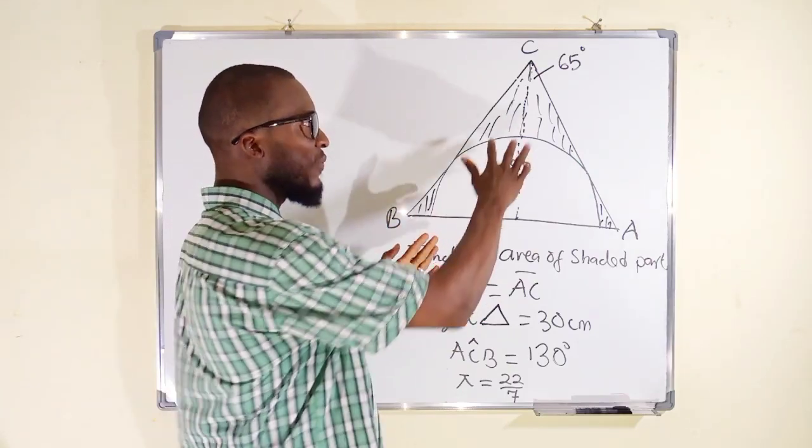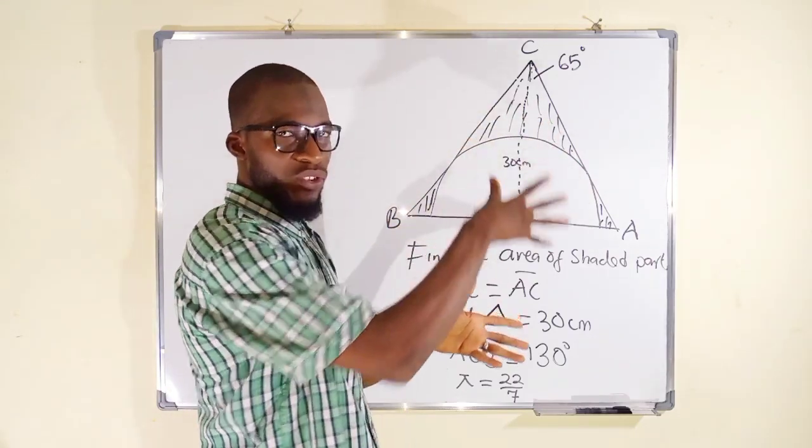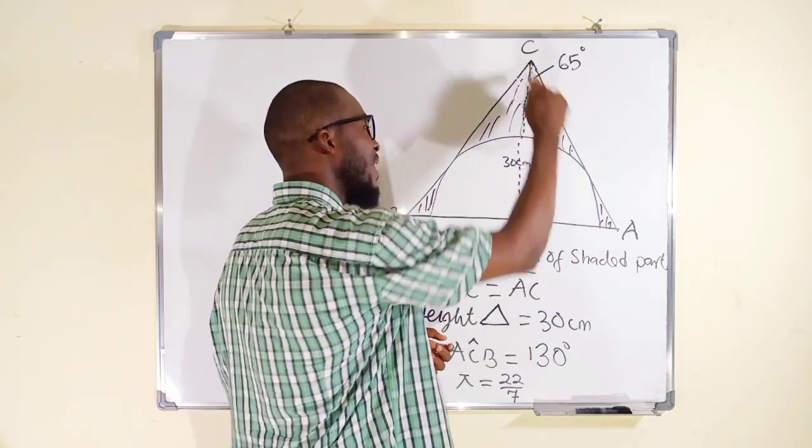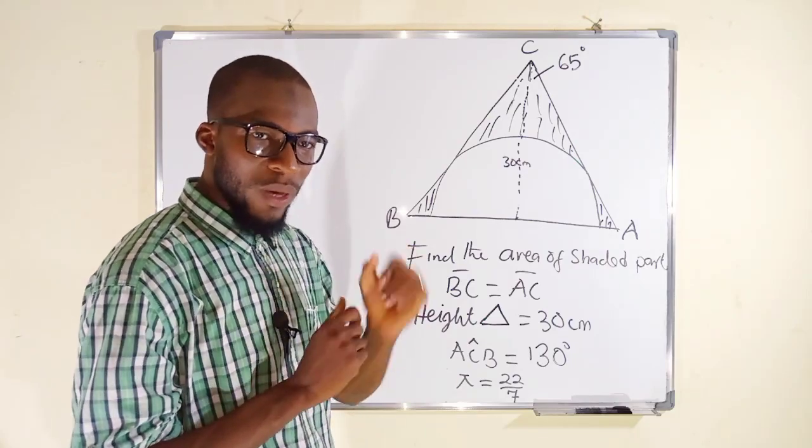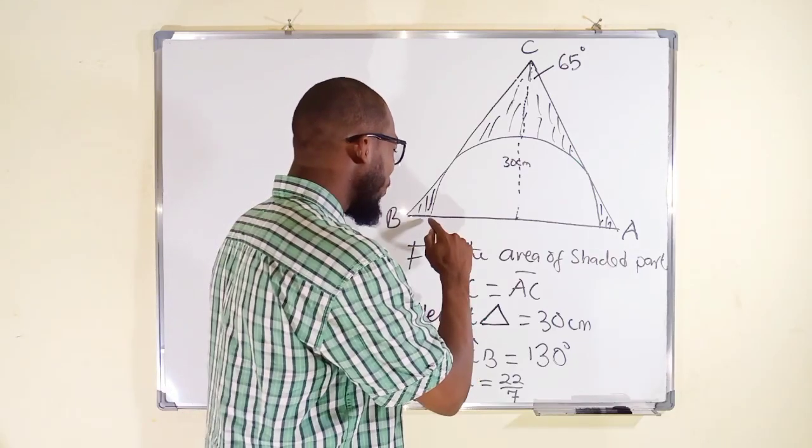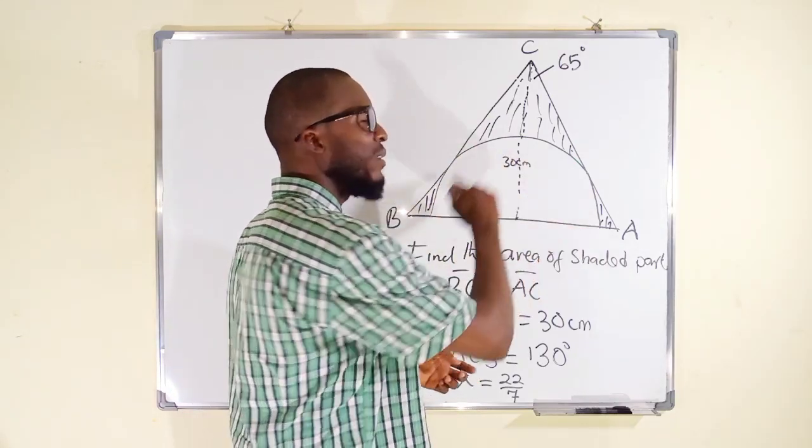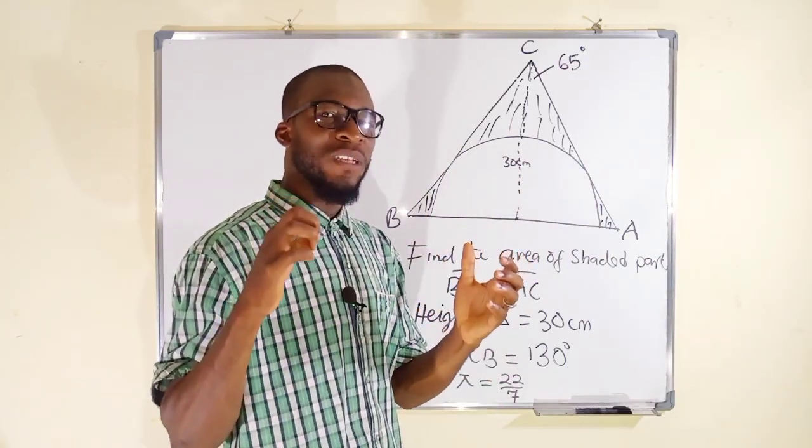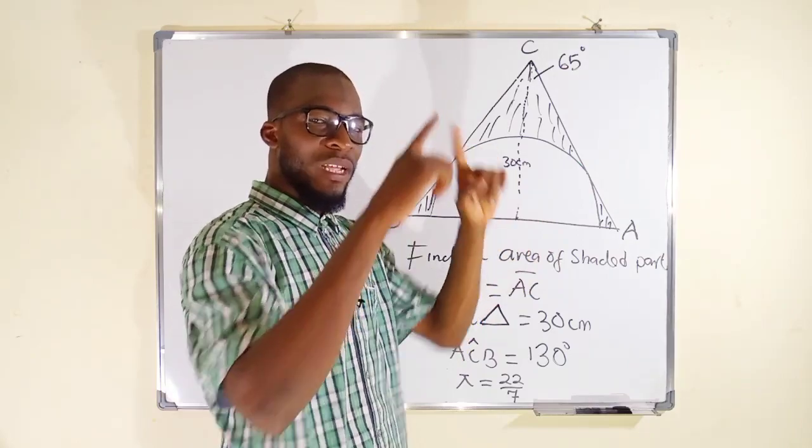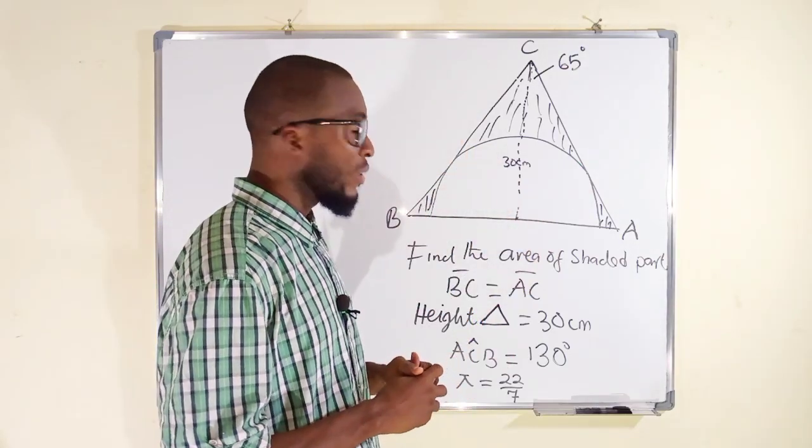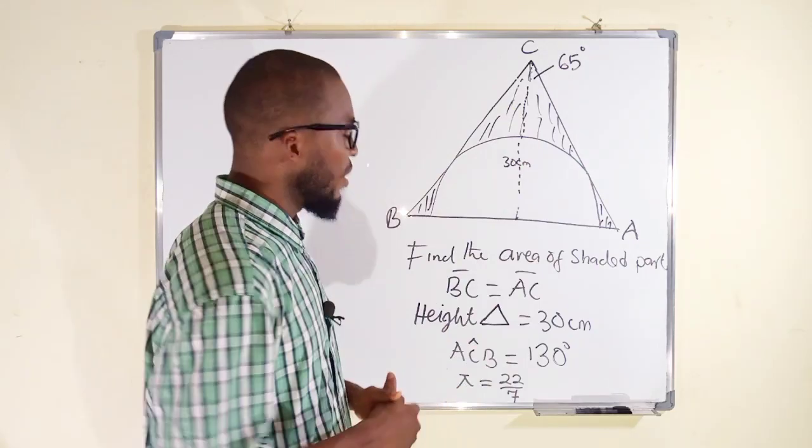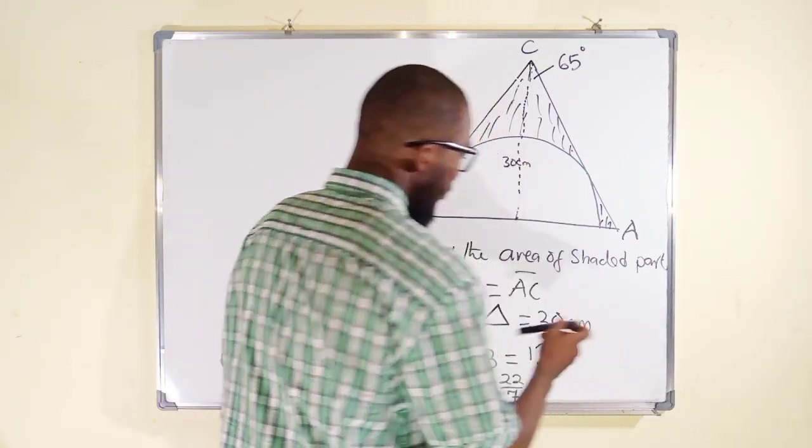So how do we start? Our main target is to find the area of the shaded region. We cannot do so without finding the area of the entire triangle. Number two, we have to find the area of the semicircle. Number three, subtract the area of semicircle from the entire area of the triangle. Whatever is left is said to be the area of the shaded region.